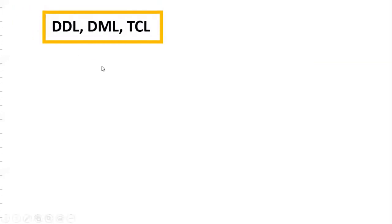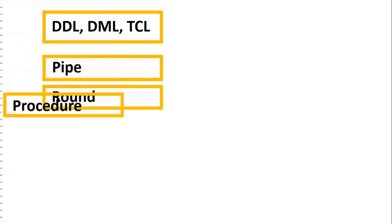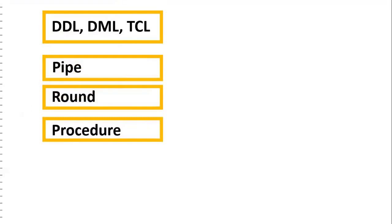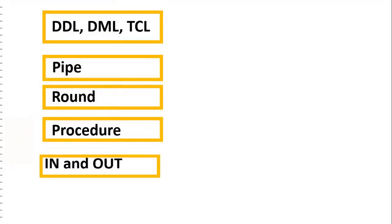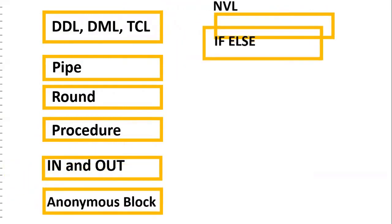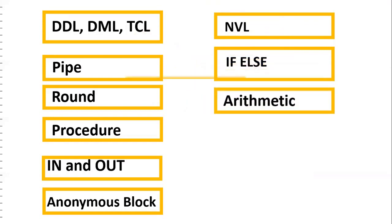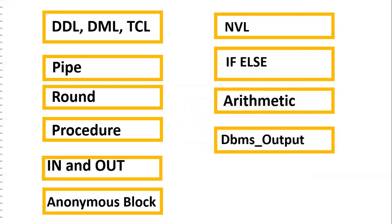In order to solve this requirement, you should have a better understanding of the following concepts: DDL — data definition language, that is creation of a table; DML — data manipulation language, that is insertion and updation; TCL — transaction control language, that is commit or rollback. Second one is pipe, used to concatenate two strings. Round function. Procedure — you should know what a procedure is, how to write a procedure, how to execute it, and in/out parameters. Anonymous block to execute the procedure. NVL to handle null values. If/else for conditional statements. Arithmetic operations like addition, subtraction, multiplication. DBMS output to see the result on the console. Into clause to store values.